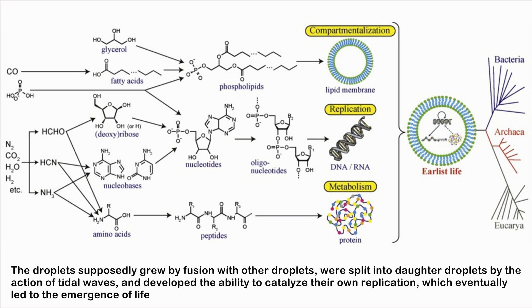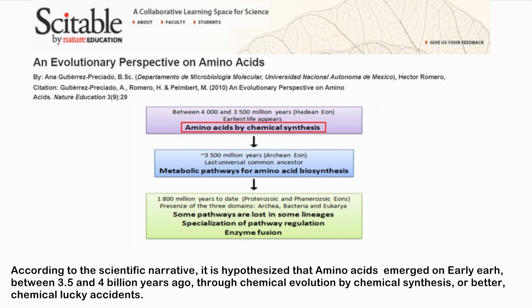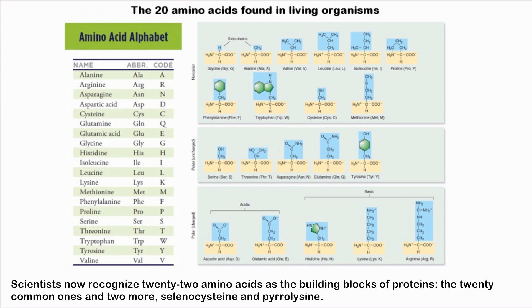According to the scientific narrative, it is hypothesized that amino acids emerged on early Earth between 3.5 and 4 billion years ago through chemical evolution — by chemical synthesis, or better, chemical lucky accidents. Scientists now recognize 22 amino acids as the building blocks of proteins: the 20 common ones, plus selenocysteine and pyrrolysine.